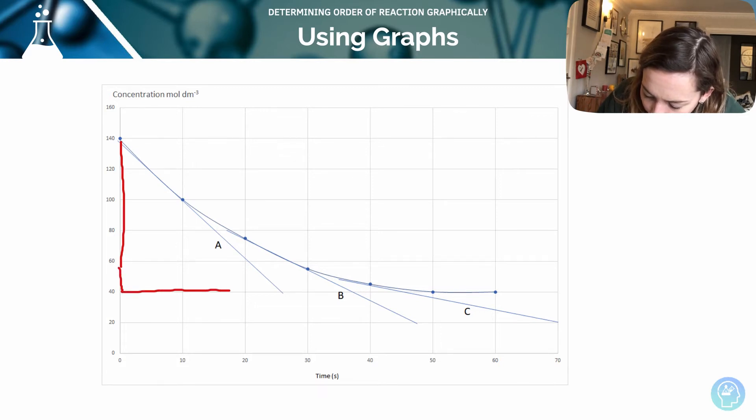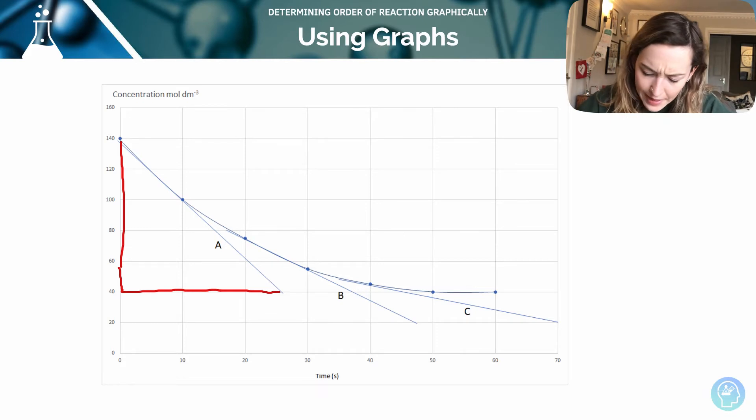So if we wanted to work out the initial rate, well, it's near to initial, it's not completely the initial. It's at this point, it's 10 seconds in, so I can't really call that initial. But at 10 seconds, what is the rate of this reaction? I'm going to do rise over run.